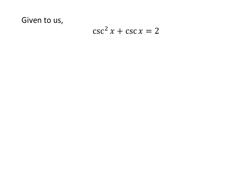Given: square of cosecant of x plus cosecant of x is equal to 2. Taking 2 from the right hand side to the left hand side gives us: square of cosecant of x plus cosecant of x minus 2 is equal to 0.